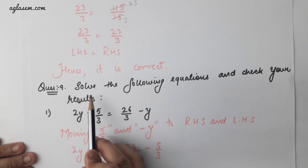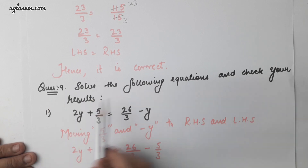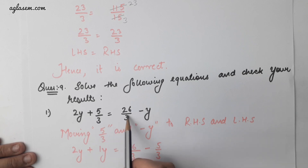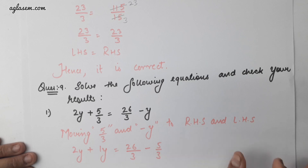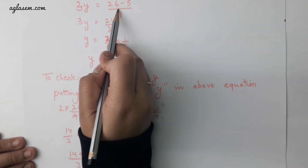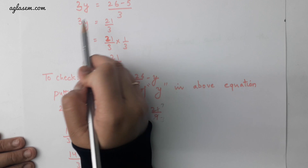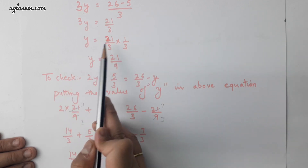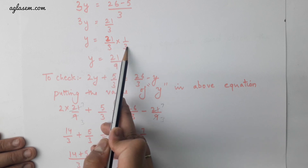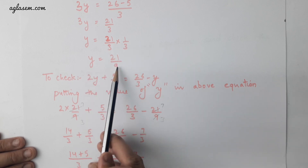Question number 9: solve the following equation and check your result. 2y plus 5 by 3 equals to 26 by 3 minus y. Moving the terms, we get 2y plus y equals to 26 divided by 3 minus 5 divided by 3, so 3y equals to 21 by 3. Therefore, y equals to 21 by 9.